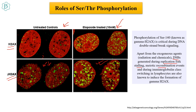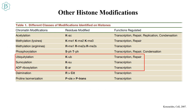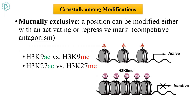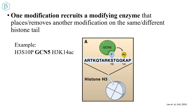Other histone modifications include ubiquitylation and sumoylation at lysine residues and ADP ribosylation at glutamate residues — all playing roles in transcription. Regarding crosstalk among modifications: H3 K9 or H3 K27 can undergo both acetylation and methylation, called competitive antagonism. One modification can recruit a modifying enzyme that places or removes another modification.